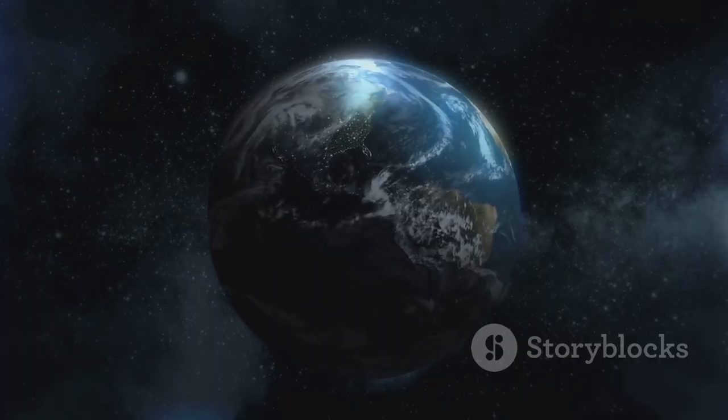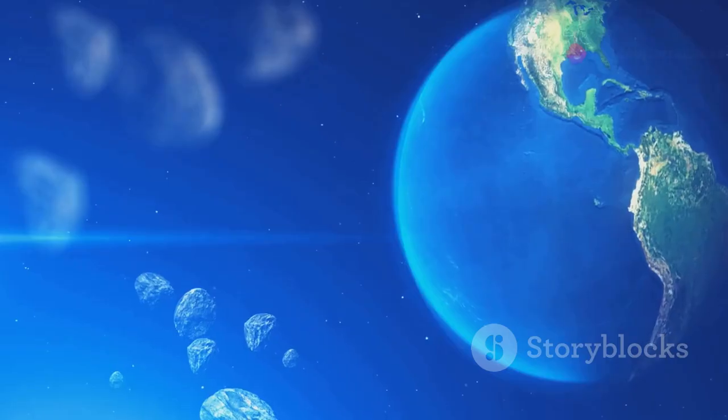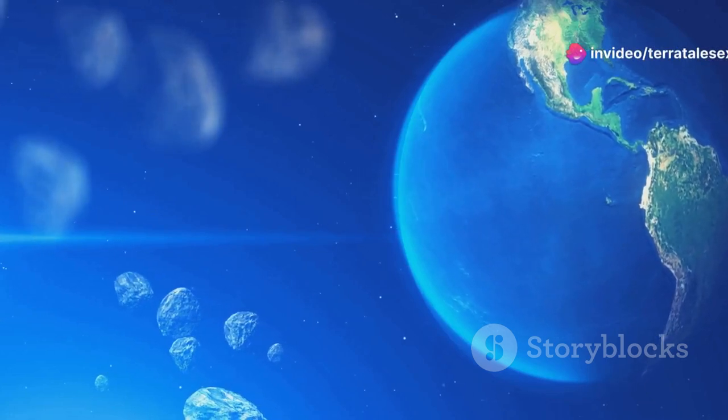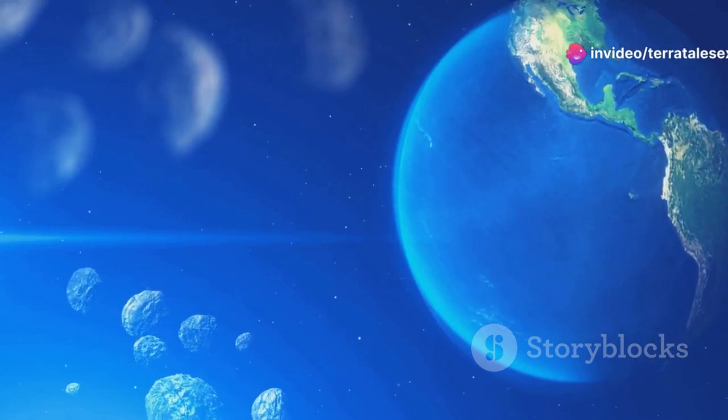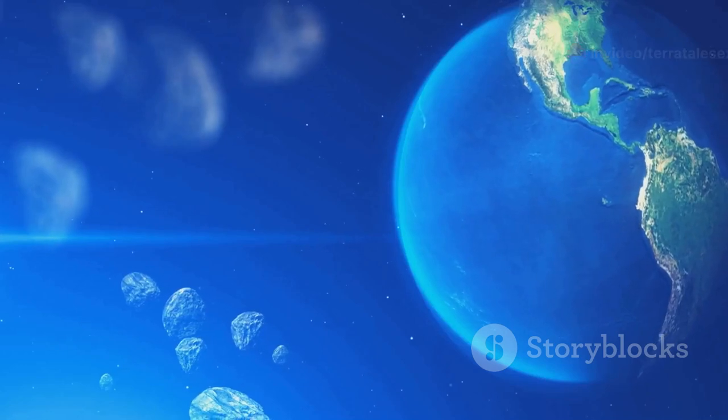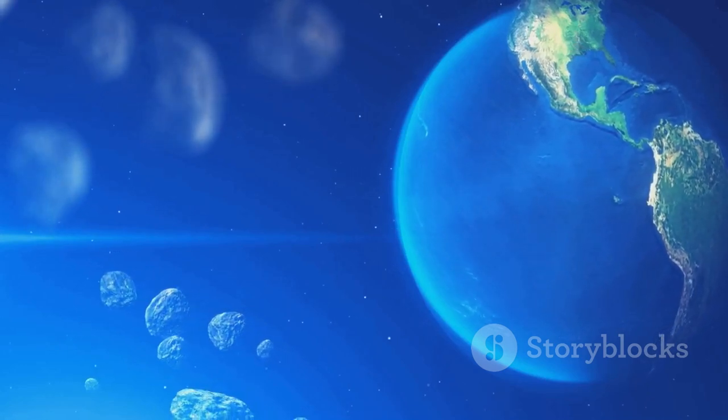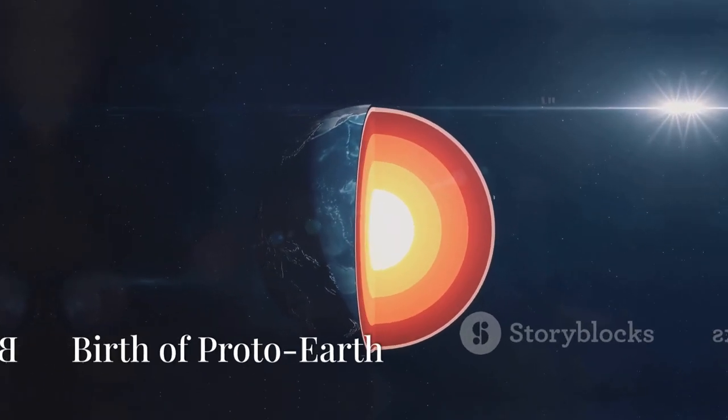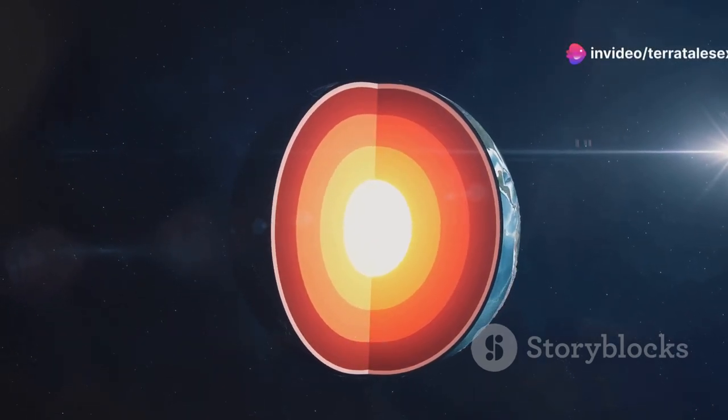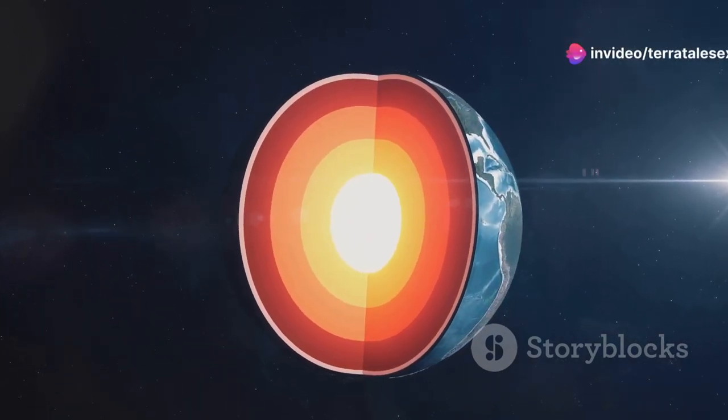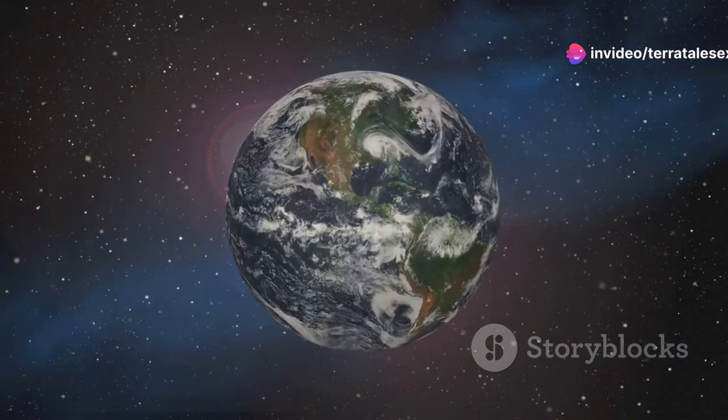The process of accretion continued, driven by gravity. The larger a planetesimal grew, the stronger its gravitational pull, attracting even more material from its surroundings. This runaway growth led to the formation of planetary embryos, the precursors to planets. One of these planetary embryos, amidst the chaotic early solar system, would eventually become our Earth.